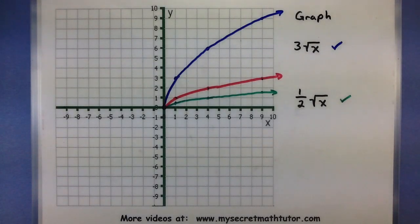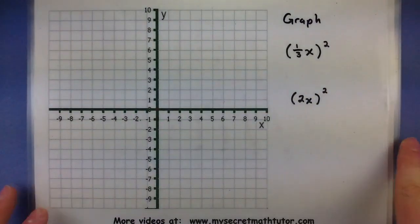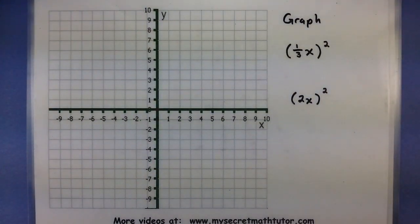Let's do this again with some more transformations, get a new function, try this all again. So this one I want to graph 1 third x quantity squared and 2x quantity squared. Since both of these involve squaring, I will start with my x squared as my parent function.